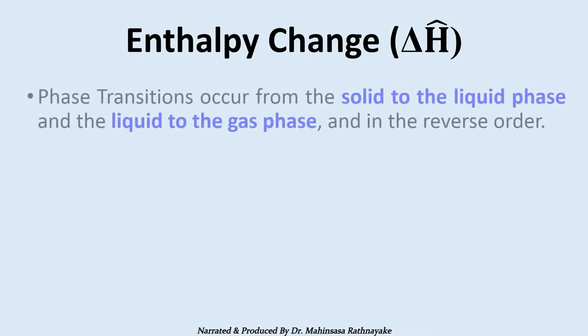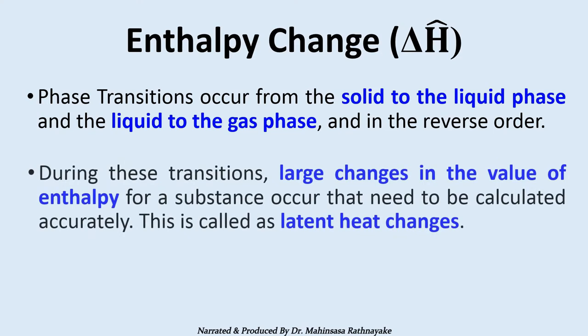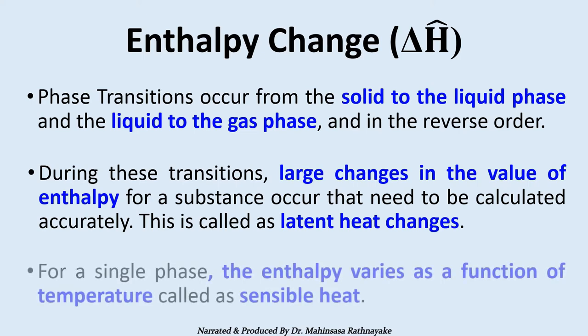Phase transitions occur from the solid to liquid phase and the liquid to gas phase and in the reverse order. During these transitions, large changes in the value of enthalpy for a substance occur that need to be calculated accurately. This is called latent heat changes. For a single phase, the enthalpy varies as a function of temperature, called sensible heat.